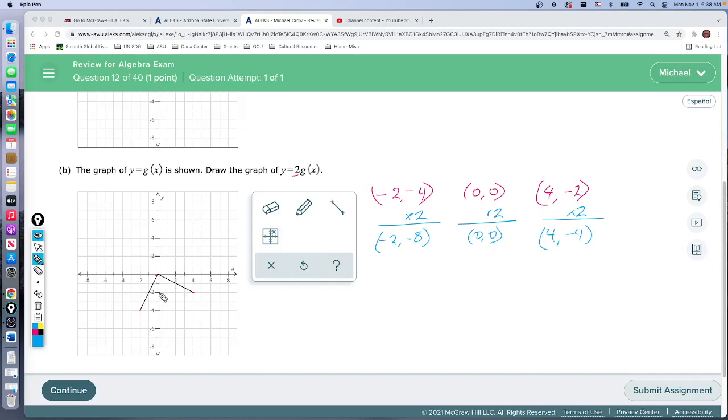So we move those points to where they need to be. Negative 2, negative 8, sorry. So that point there, 0, 0 stays there. And then we've got this point 4, negative 4.